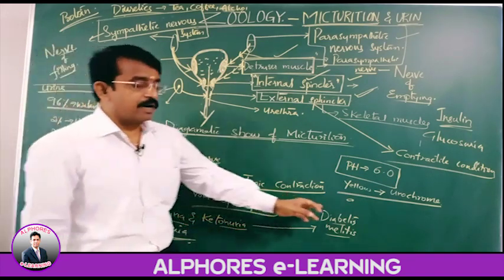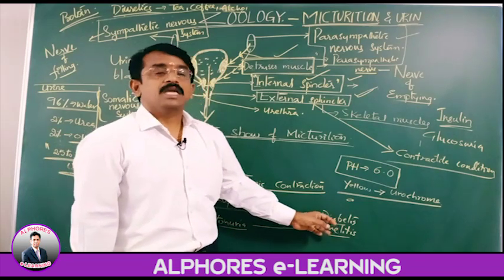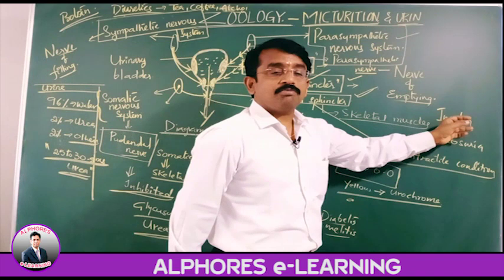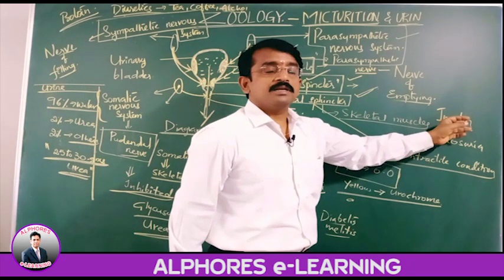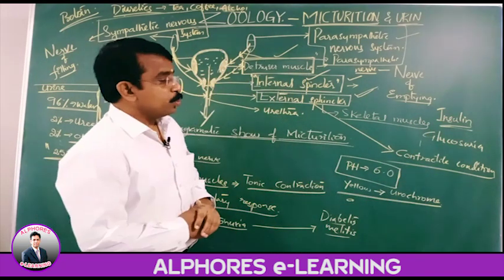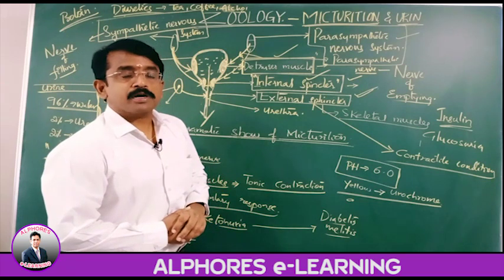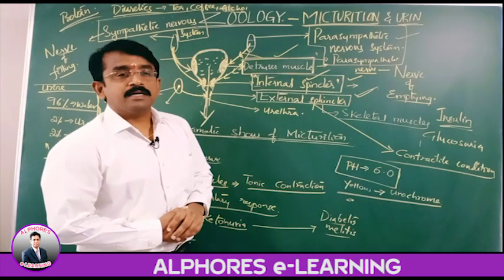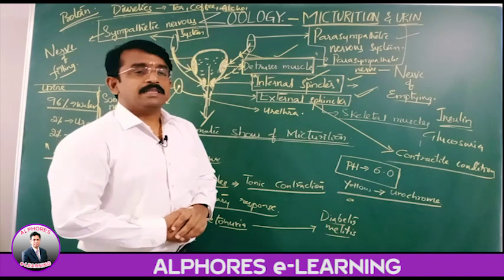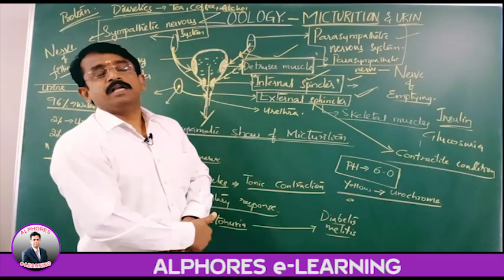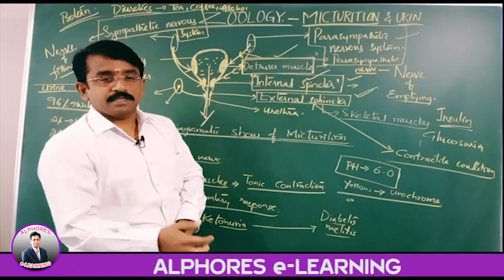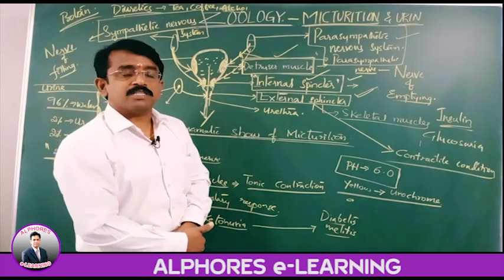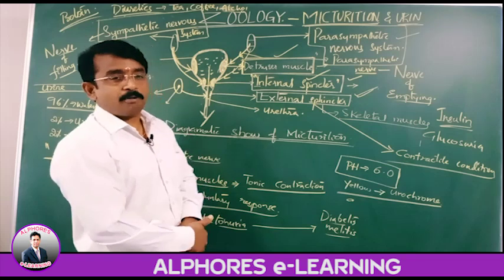These are the indicators of diabetes mellitus, due to deficiency or a defect in insulin. Daily, 1.5 liters of urine is excreted — that is, 99% of the fluids, the water, is absorbed from the urine that is formed.